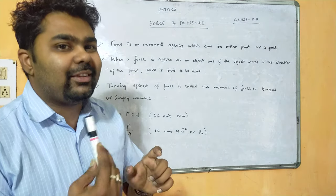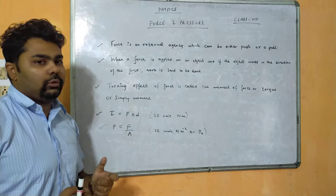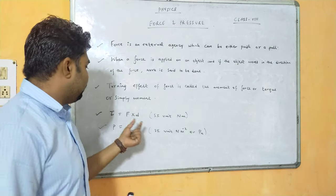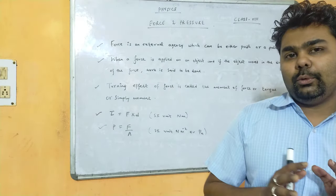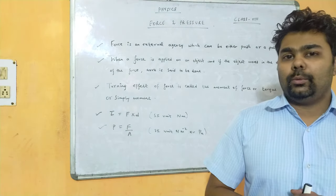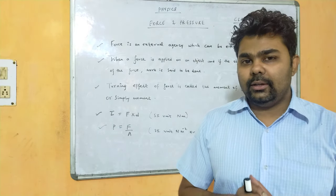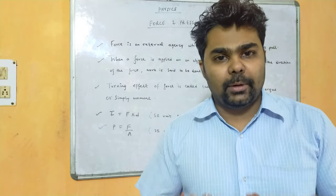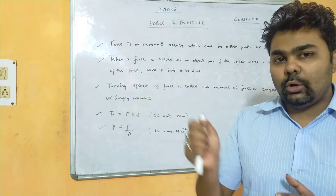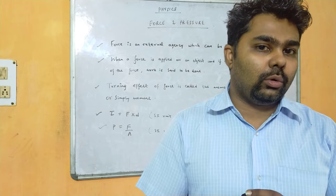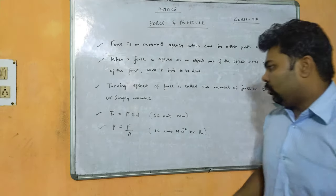When a force is applied on an object and the object starts rotating, the turning effect of force is called moment of force or torque. Torque is denoted by tau and depends on two factors: force and perpendicular distance. For example, when opening a door, if the hinges are at maximum distance from the point of application of force — the handle — we need to apply less force. If the handle is very close to the hinges, we need to apply more force.